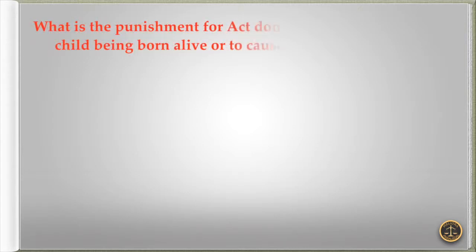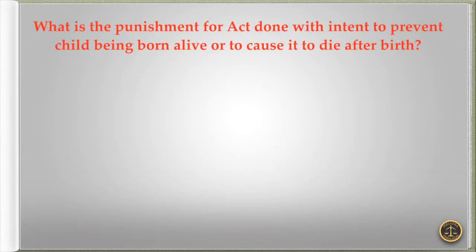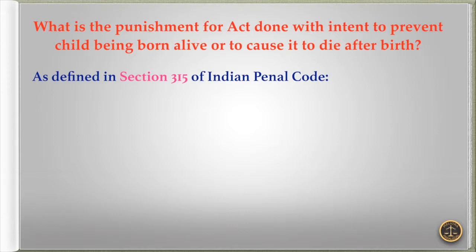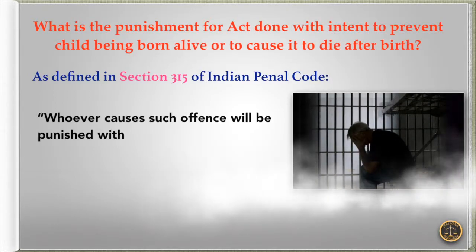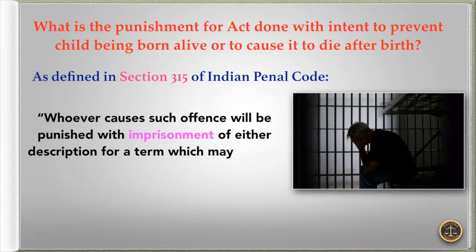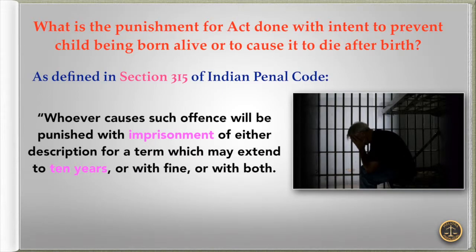Now the next question is: what is the punishment for act done with intent to prevent child being born alive or to cause it to die after birth? As defined in Section 315 of the Indian Penal Code, whoever causes such offence will be punished with imprisonment of either description for a term which may extend to 10 years, or with fine, or with both.